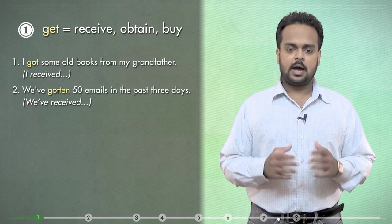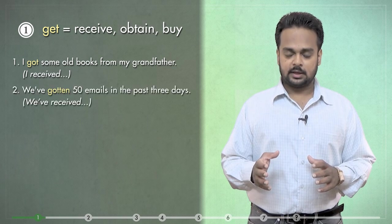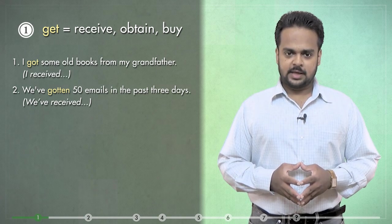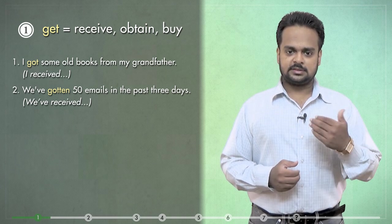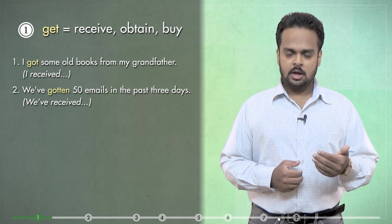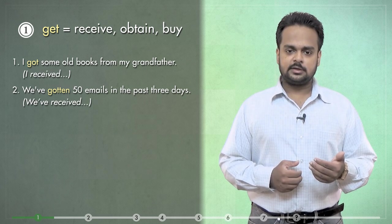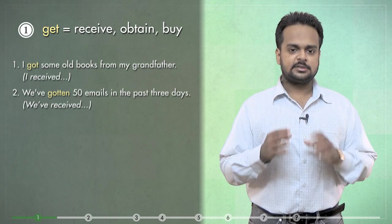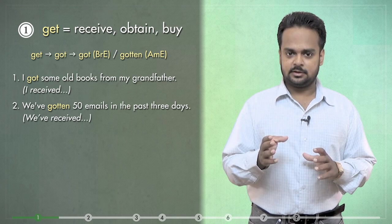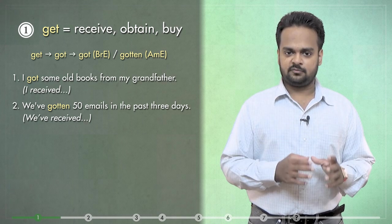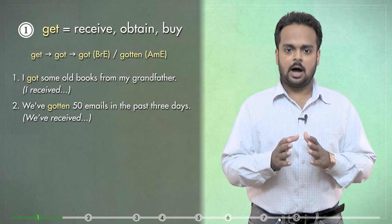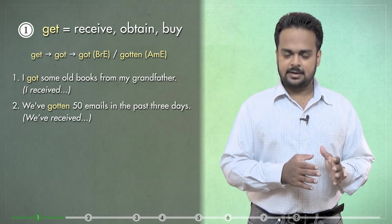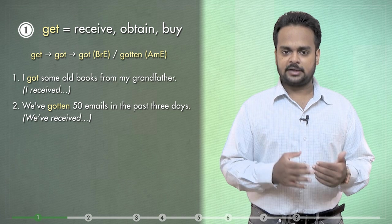In the next example, we've gotten 50 emails in the past three days. It means we have received 50 emails. Notice that the first sentence is in the past simple tense and the second sentence is in the present perfect tense. So in sentence number two, we are using the third form of get – the past participle form. The verb get is irregular. That is, we don't say getted to make the past simple or past participle forms. The correct forms are get, got and gotten. In American English, gotten is more common and in British English, got is the preferred past participle form.